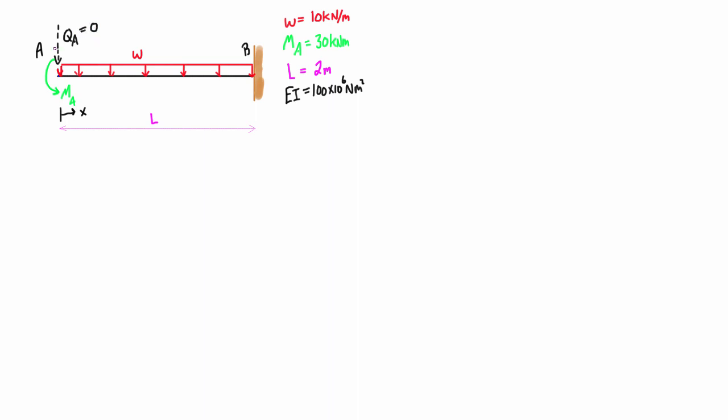We can write the expression using Castigliano's theorem, basically saying that the deflection at the point that we're interested in, in this case it's YA, is equal to the partial derivative of the total elastic strain energy of the beam with respect to QA.